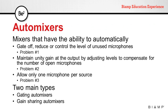Automatic mixers are mixers that have the ability to automatically gate off, reduce, or control the level of unused microphones, solving problem one. They can also maintain unity gain at the output by adjusting levels to compensate for the number of open microphones, solving problem two. They also have mechanisms to allow only one microphone per source, solving problem three. There are two main types: gating automatic mixers and gain-sharing automatic mixers.